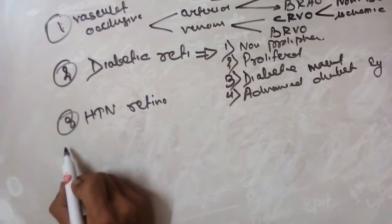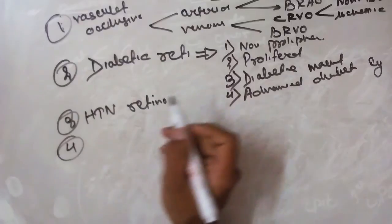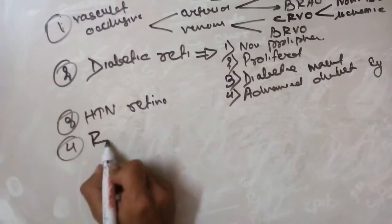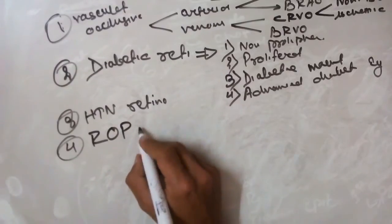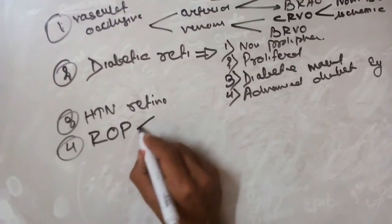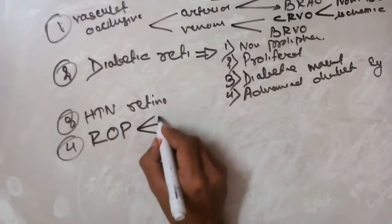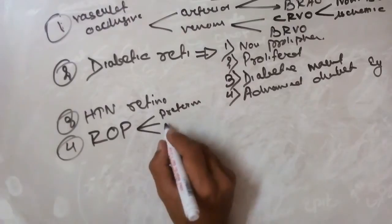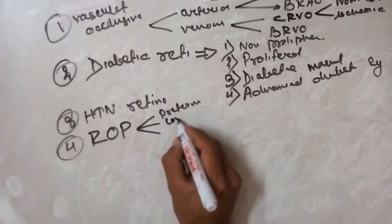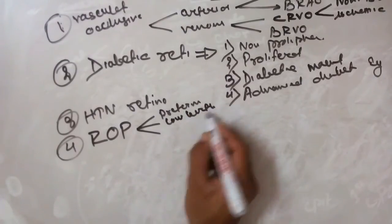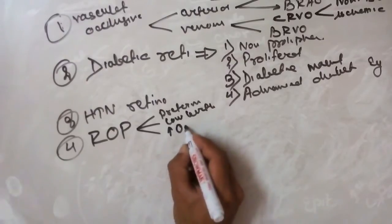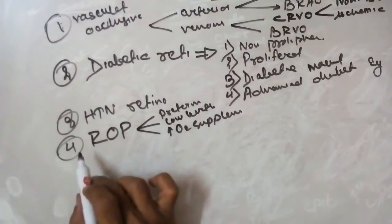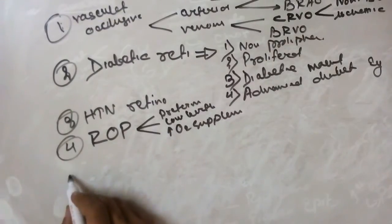Retinopathy of Prematurity (ROP) is usually caused due to three causes: preterm delivery, low birth weight baby, or due to high oxygen supplementation to the baby after birth. These are the important causes for retinopathy of prematurity.